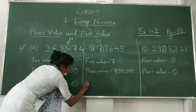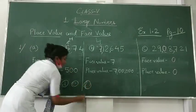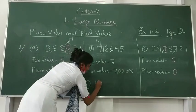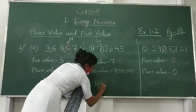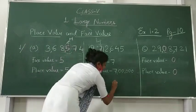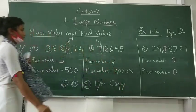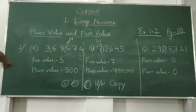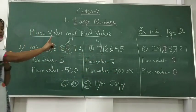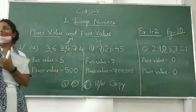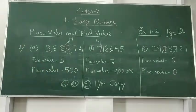Now, question D, E, F — you will do it in your copy by yourself by seeing the examples. As I have shown on the board, you can write questions A, B, C by looking at the board, and D, E, F you will do by yourself.